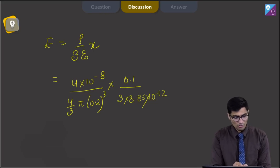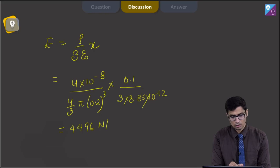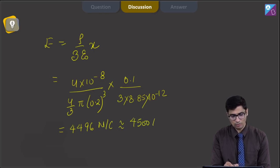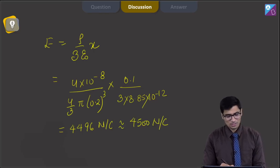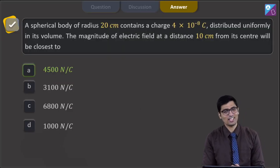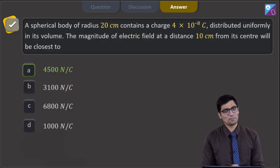On solving this further we get a value of approximately 4496 newton per coulomb, which can be approximately written as 4500 newton per coulomb. As per the given options, the correct answer is option number A.